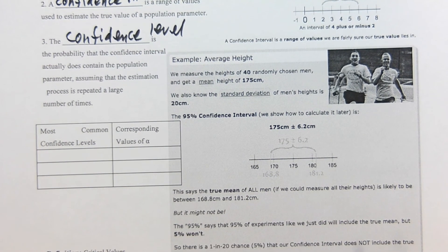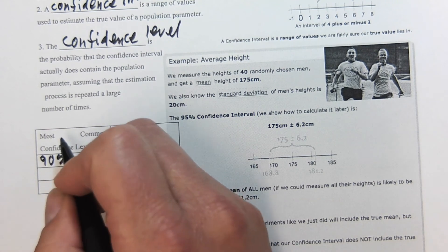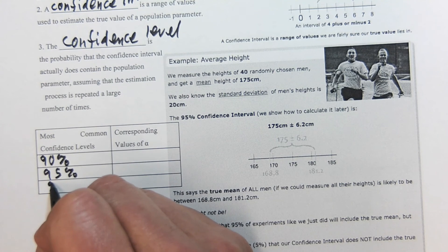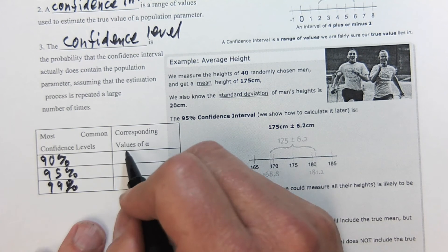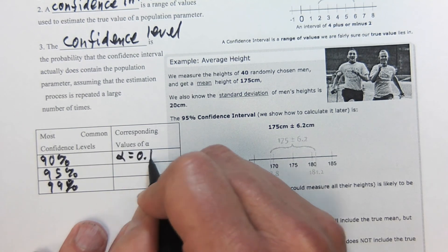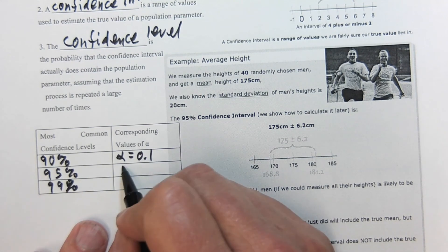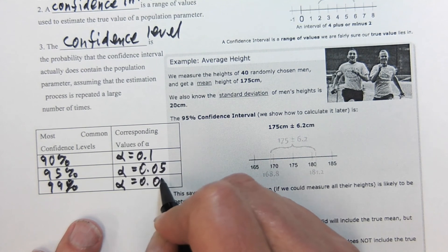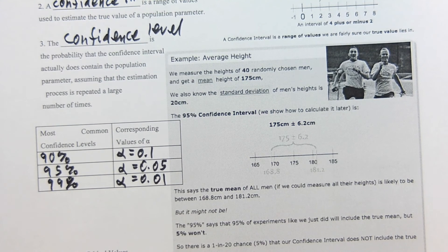For this table, these are the most common confidence levels: 90% confidence, 95% confidence, and 99% confidence. The alpha that we're getting from this is the opposite, so it's basically 1 minus 0.9 is going to be 0.1, point zero five, and point zero one. These are the corresponding alpha values.